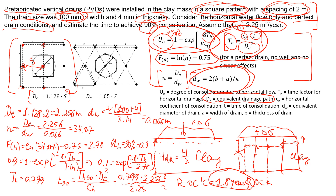This means that if we use vertical drains in a square pattern with a spacing of 2 meters for this particular clay mass, it's going to take 1.8 years to reach 90% consolidation. I hope you learned something about this type of consolidation and how to use vertical drains. Thanks for watching this video. Bye.